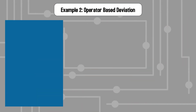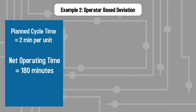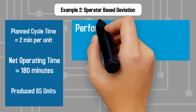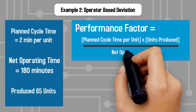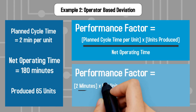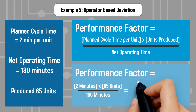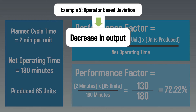In this example, let's assume cycle time per unit is still 2 minutes and net operating time is 180 minutes. But the slower, new operator produces only 65 units during the shift. The formula for the performance factor is cycle time per unit multiplied by units produced, divided by net operating time. Using the given data for the new operator, we calculate the factor's numerator as 130 and the denominator as 180. Thus, the performance factor is 72.22%. This was an example of an operator-based deviation that decreased output.